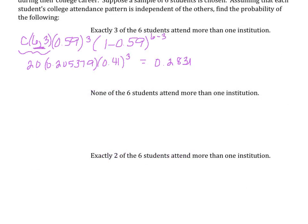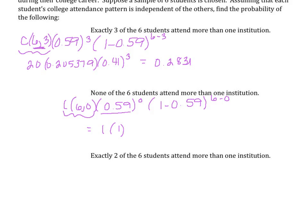Let's determine the probability that none of the students attend more than one institution. So we need to find six choose zero, times 0.59 to the power of zero, times one minus 0.59 to the power of six minus zero. Six choose zero is one — that's a common theme: any number choose zero equals one. Also, anything to the zero power equals one. So we just need 0.41 to the sixth power, which gives us 0.00475. There is a less than 1% chance that none of the students will attend more than one institution.